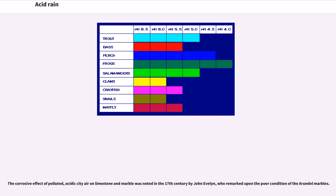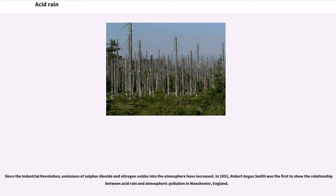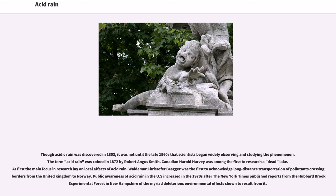The corrosive effect of polluted, acidic city air on limestone and marble was noted in the 17th century by John Evelyn, who remarked upon the poor condition of the Arendelle marbles. Since the Industrial Revolution, emissions of sulfur dioxide and nitrogen oxides into the atmosphere have increased. In 1852, Robert Angus Smith was the first to show the relationship between acid rain and atmospheric pollution in Manchester, England. Though acidic rain was discovered in 1853, it was not until the late 1960s that scientists began widely observing and studying the phenomenon. The term acid rain was coined in 1872 by Robert Angus Smith.